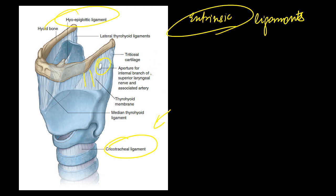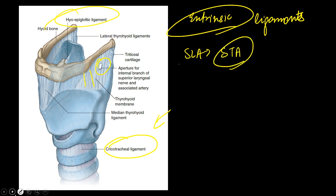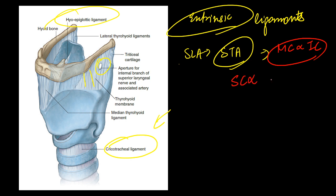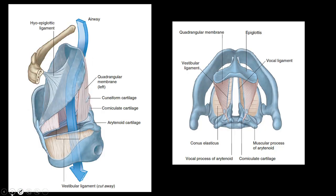Passing through that aperture are the internal laryngeal nerve and the superior laryngeal artery, which is a branch of the superior thyroid artery. These structures are traveling between the middle constrictor and inferior constrictor. Let me know in the comment section what is the structure that is passing between the superior constrictor and middle constrictor.